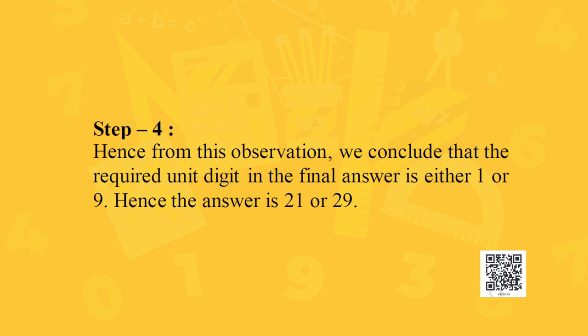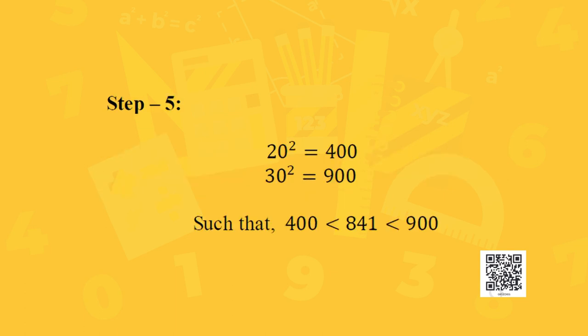For the units digit, observe the units digit of 841, which is 1. From the table of squares, 1 appears as the units digit at 1 squared and 9 squared. So the answer must be either 21 or 29. To choose the right answer, use the two boundary numbers identified earlier, which were 2 and 3.